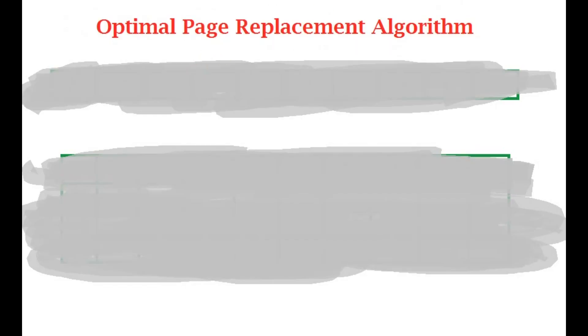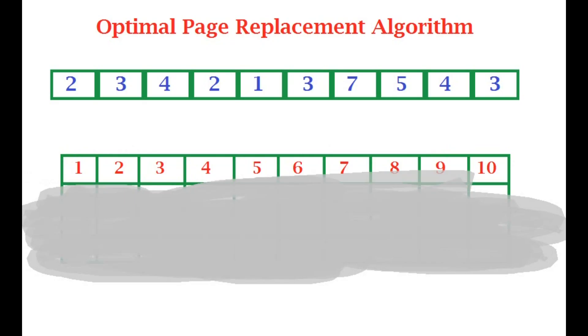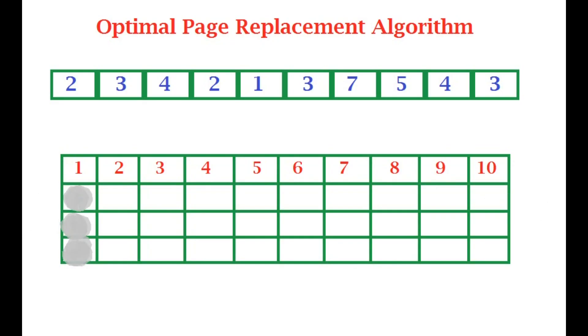Hello guys, today we're seeing the optimal page replacement algorithm. This is the pages we have. We're going to replace these and these are the number of iterations we are going to perform, and this is the page frame size, that is three here.